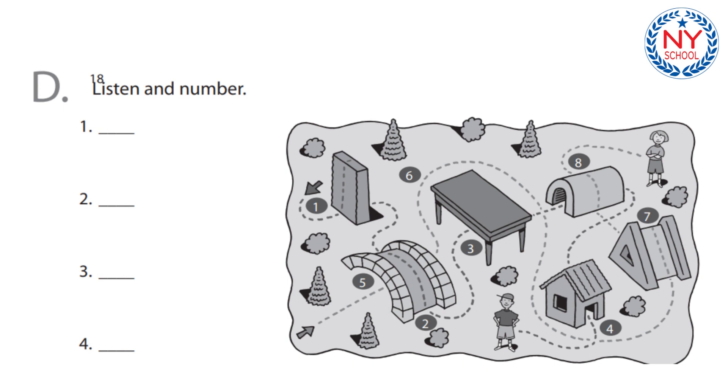3. Where did the boy go? He went through the tunnel. 4. Where did the girl go? She went over the wall.